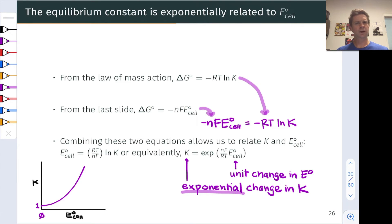But from the last slide, we also saw another expression that ΔG° is equal to -nFE°_cell. So we can combine these two equations to create a new equation that relates E°_cell to K. -nF, Faraday's constant, times E°_cell is equal to -RT times the natural log of K. And an equivalent form of this is K equals e to the power of nF divided by RT times E°_cell.